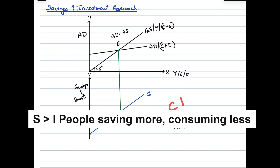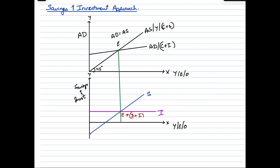To the right of point E, savings is greater than investment, indicating consumers are saving more than they are spending. This leads to a recessionary gap in the economy, and it becomes necessary for the government to deploy expansionary fiscal policies while central banks deploy monetary policies to increase purchasing power, so that consumption rises, and savings again become equal to investment.